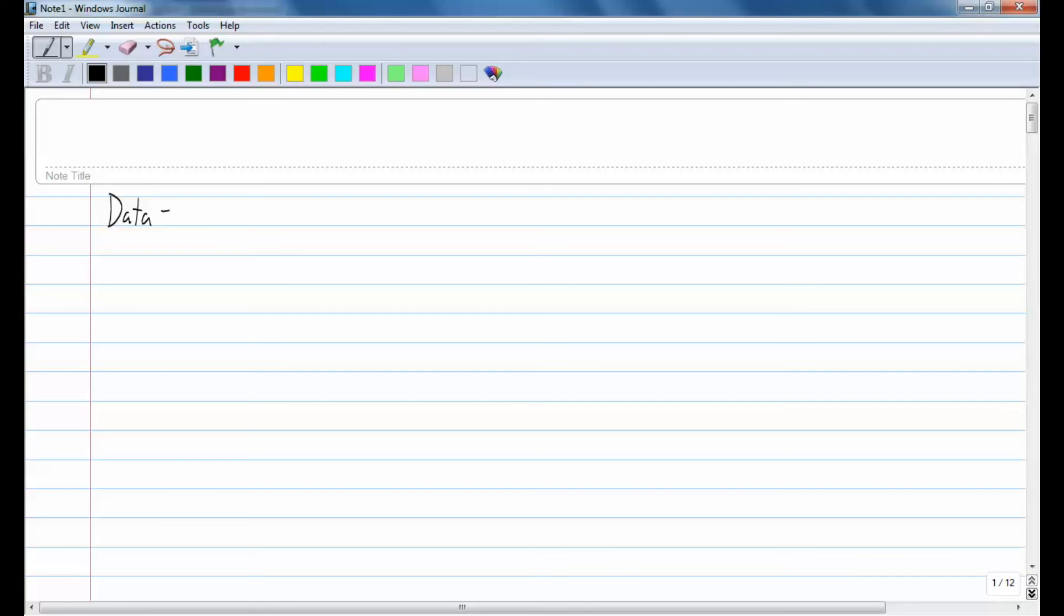There's lots of ways to observe things. The collection of those observations, that would be data. Your textbook says, such as measurements, genders, survey responses, but that's just examples. But these collections of observations, that is data. Or some people call it data.